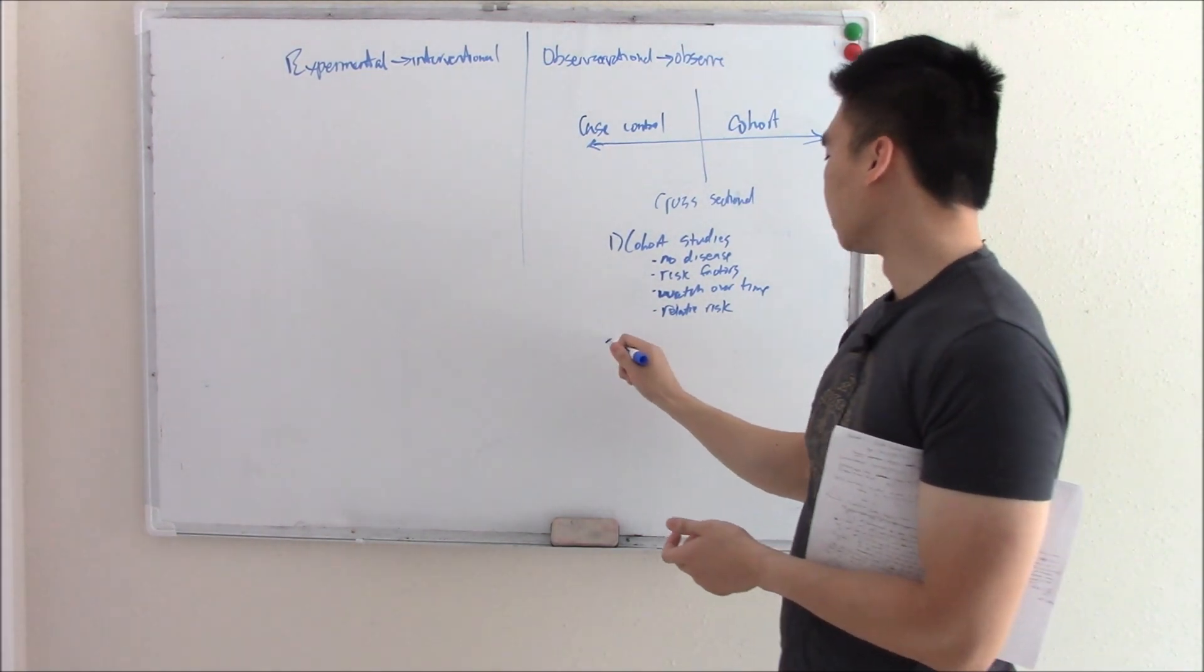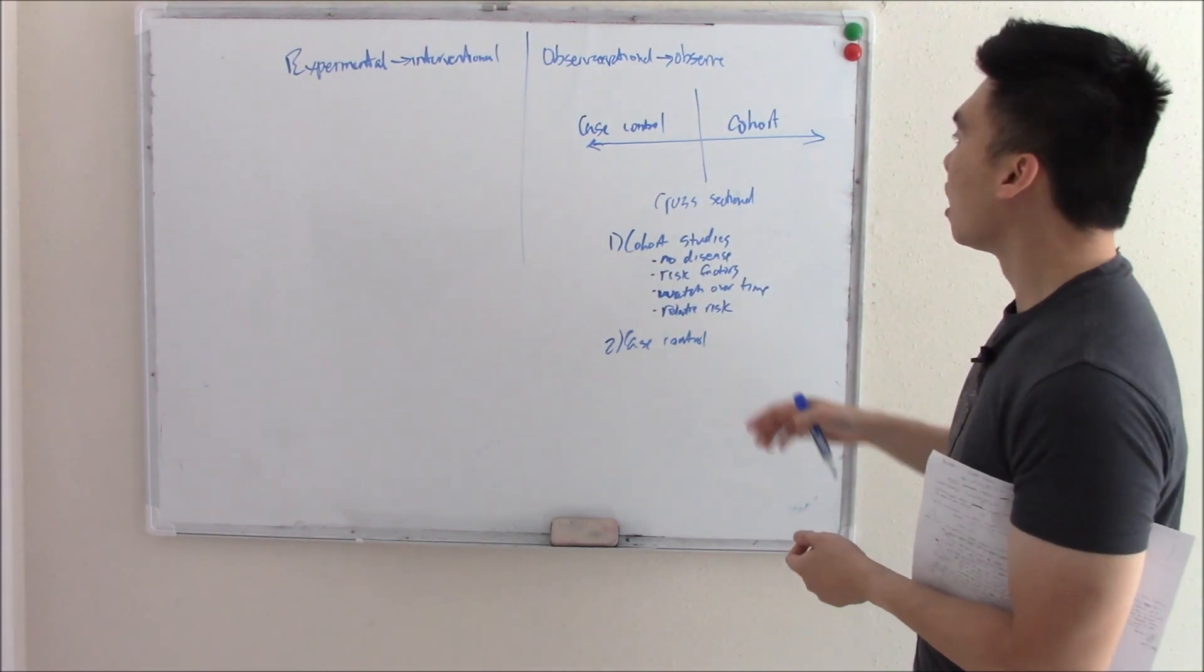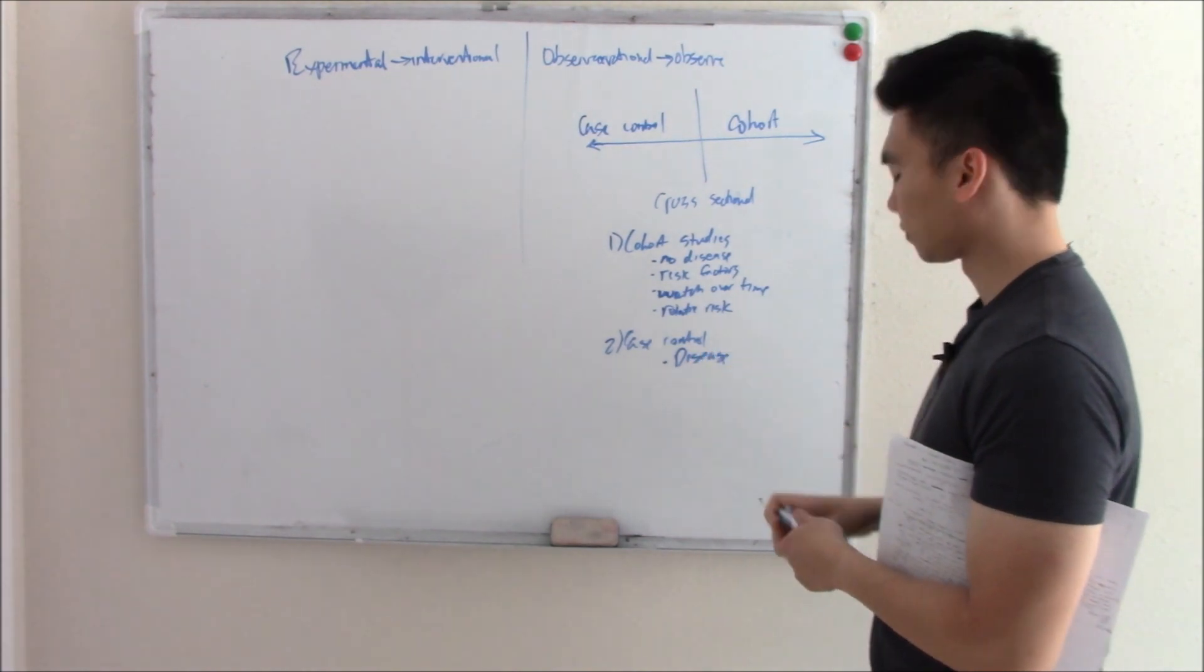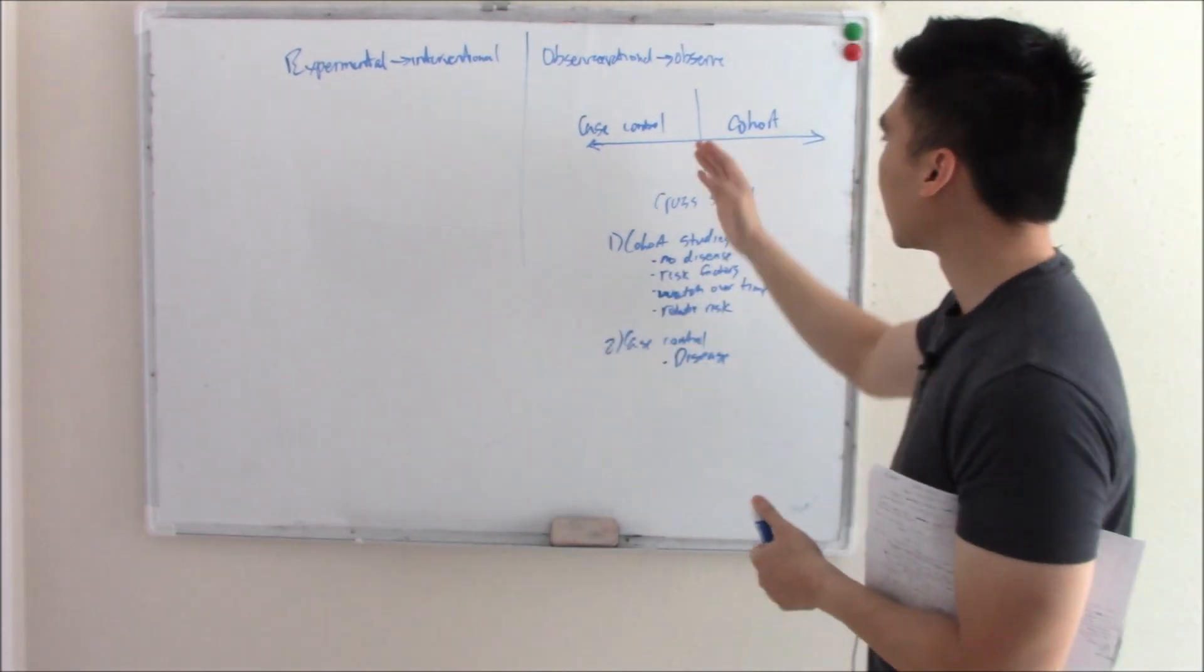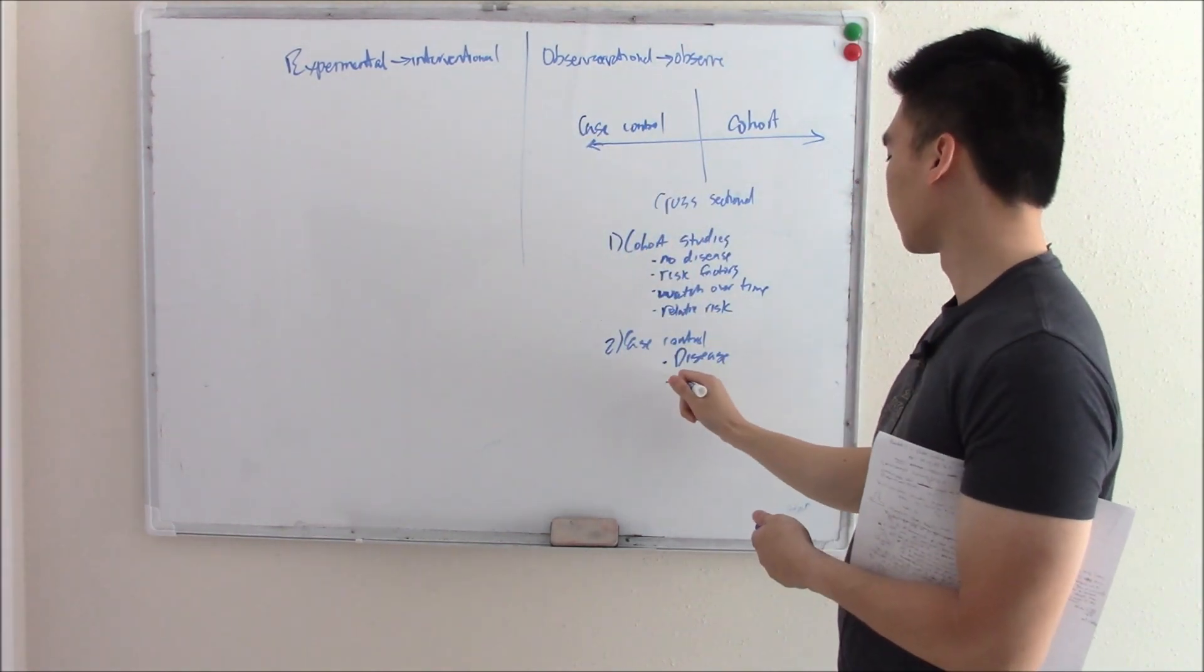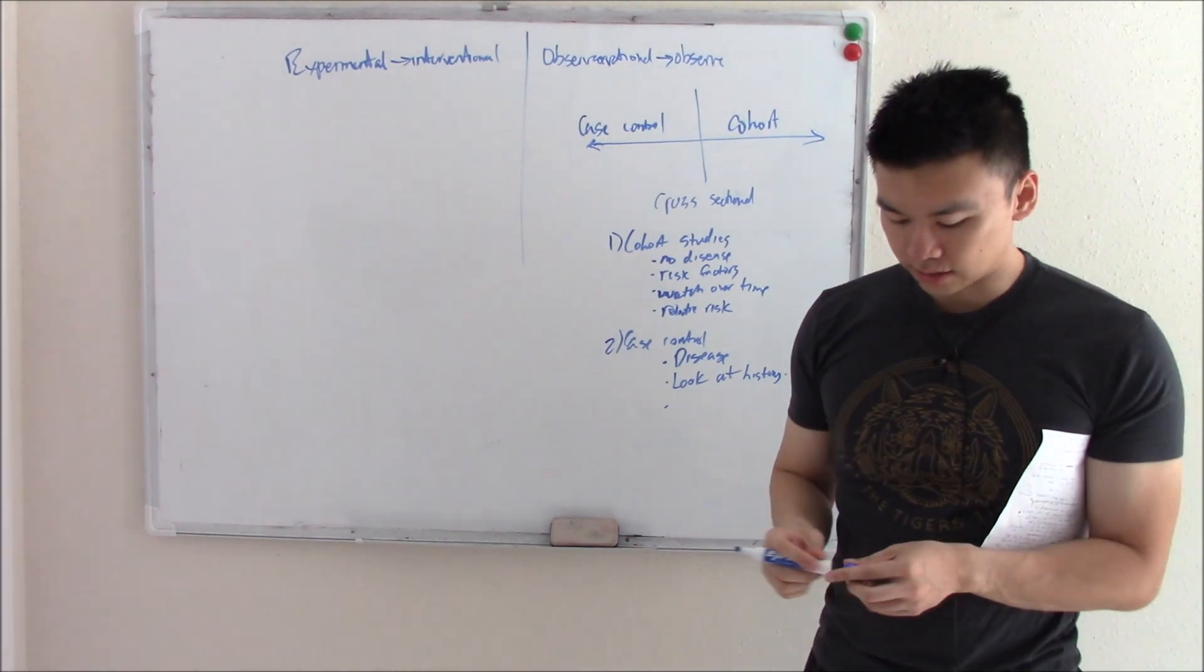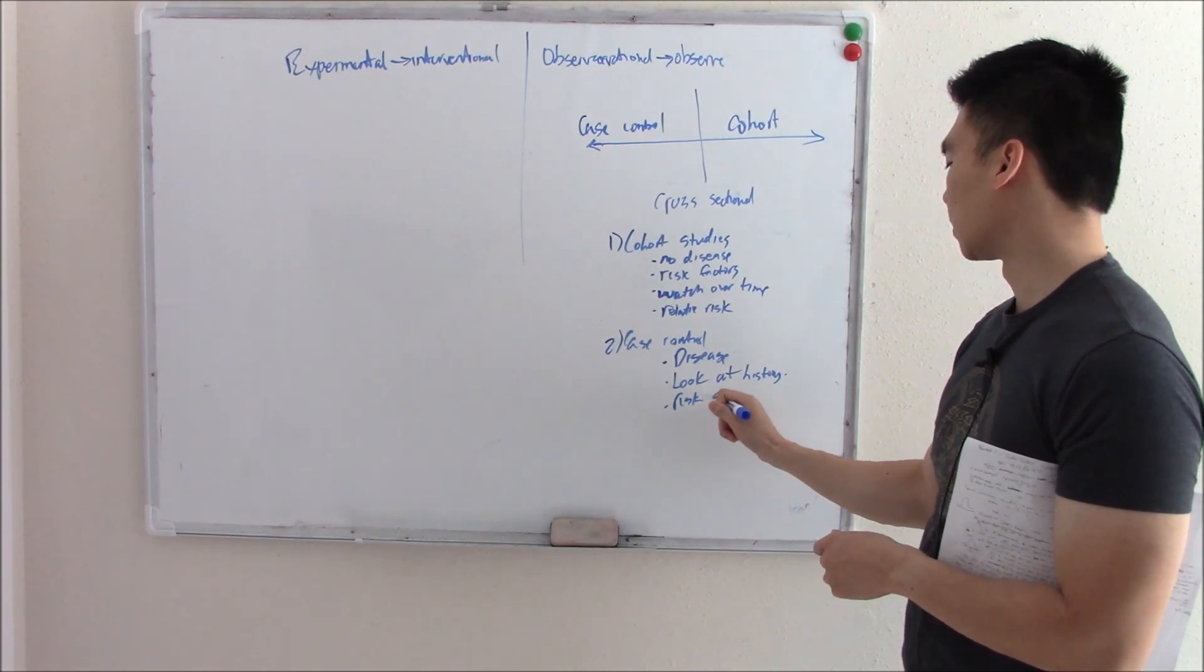Next one is case control. Case control is literally the exact opposite of cohort studies. Whereas cohort, you get a group of people that don't have the disease, in case control, you get a group of people that do have the disease. In cohort where you're looking forward, where you're watching them over time, in case control, you're looking backwards. It's retrospective. You look back in the patient's history, in the chart. So look at history, looking backwards.